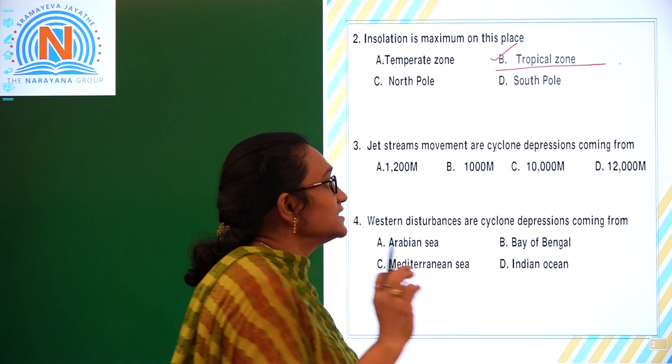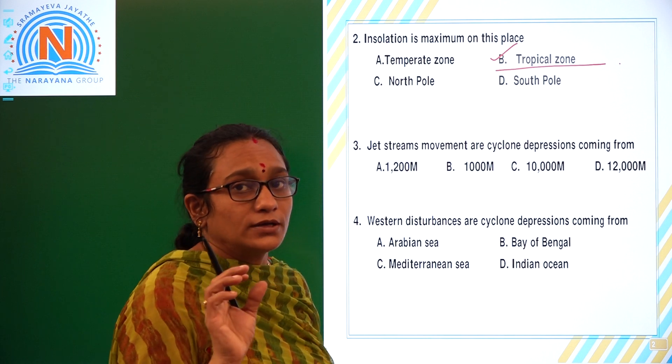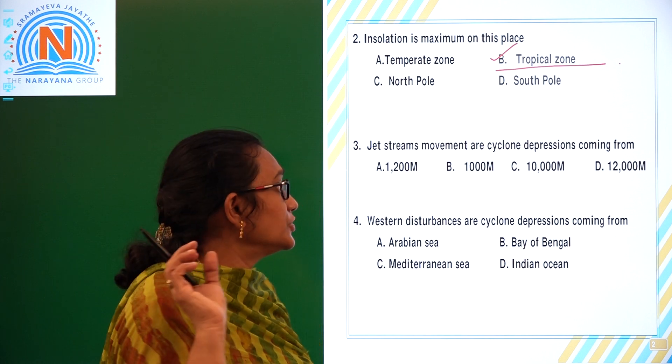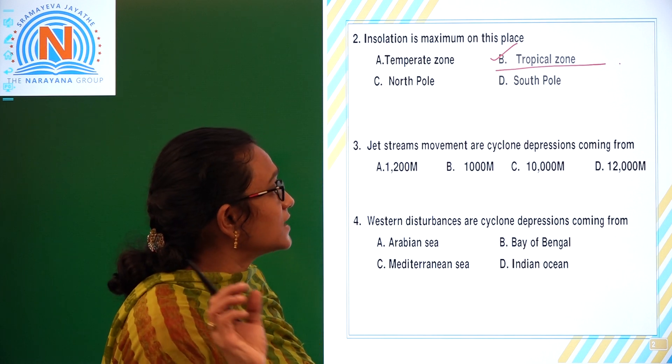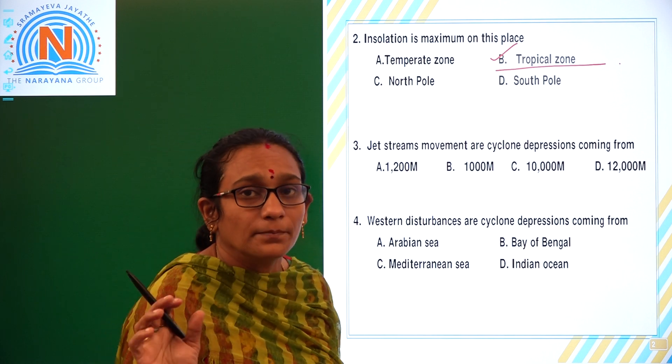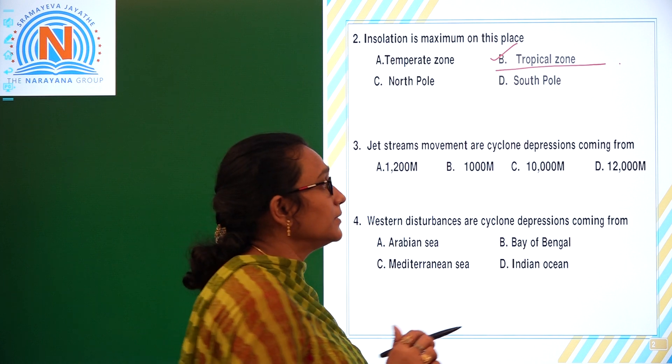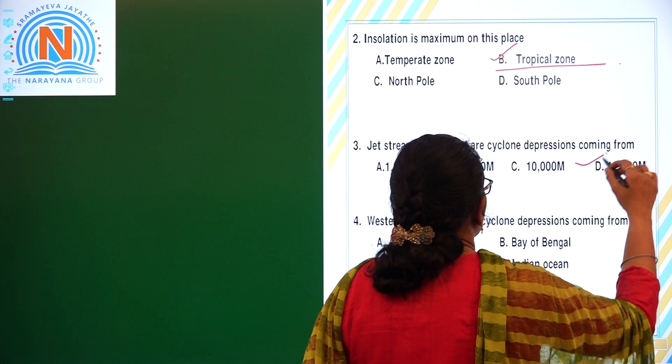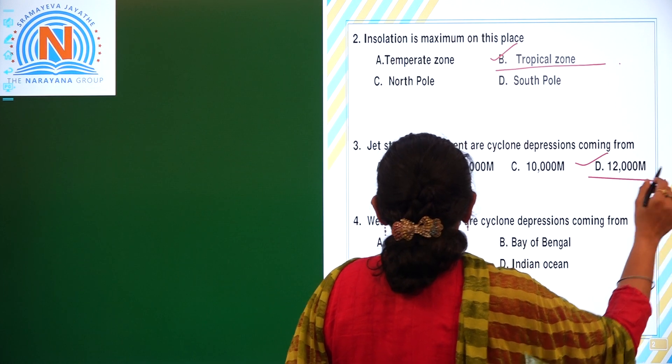Next: jet stream movement. Jet stream movements — from how many meters? From 12,000 meters.